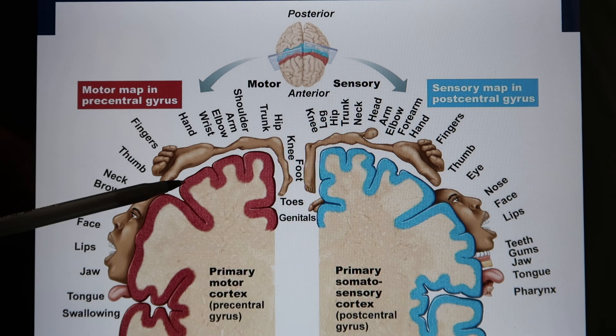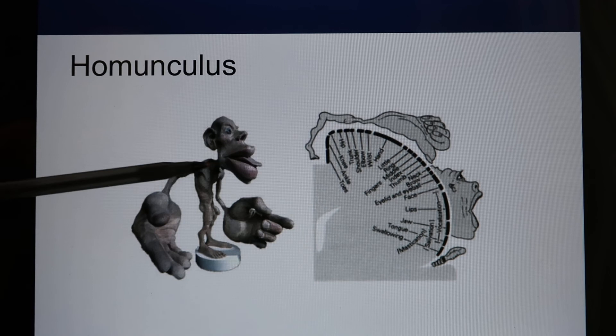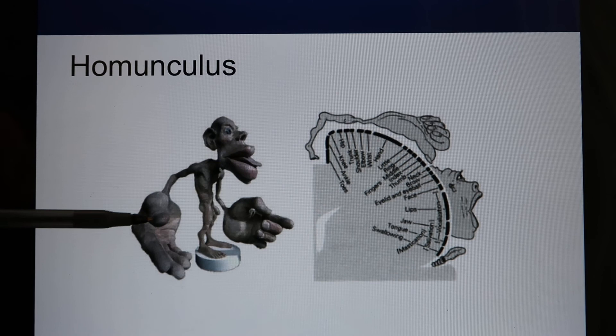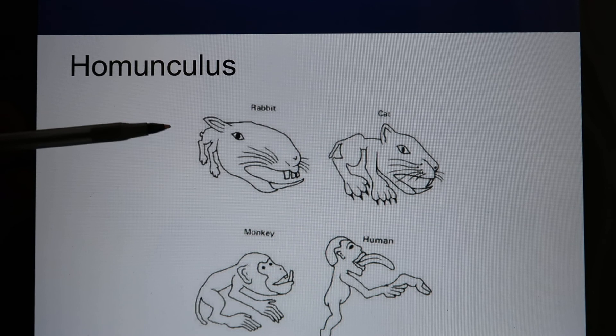If we draw your body based on the number of neurons dedicated to each part, it would look like the homunculus — a figure with a big hand, big face, and especially big lips, but a small body. This is called the homunculus and it tells you the brain really favors the hand, face, and lips. This is not just true for humans; animals also dedicate a lot of neurons to analyzing information from the head rather than the body.